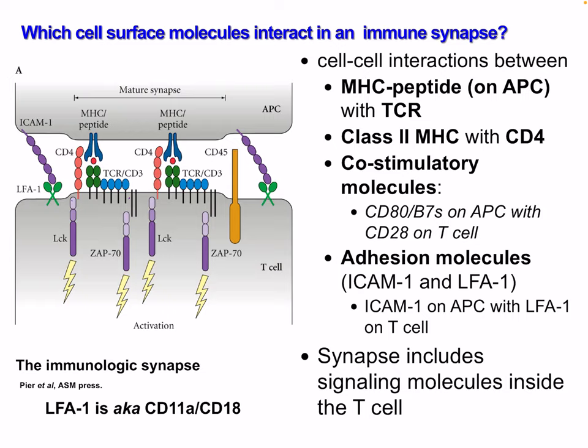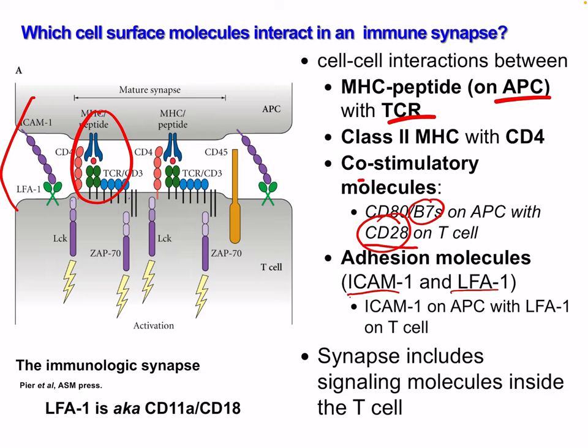In the immune synapse there are cell-to-cell interactions between the MHC peptide on the APC with the T cell receptor, class 2 MHC with CD4, and co-stimulatory molecules including CD80 and CD86 — our B7 molecules — which bind to CD28. We also have adhesion molecules: ICAM on the APC with LFA1 on the T cell. The synapse also includes signaling molecules inside the T cell such as LCK and ZAP70.